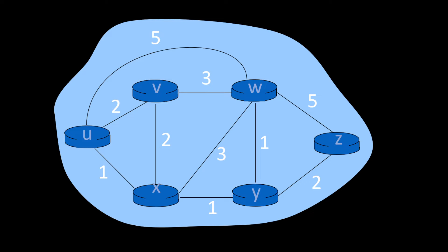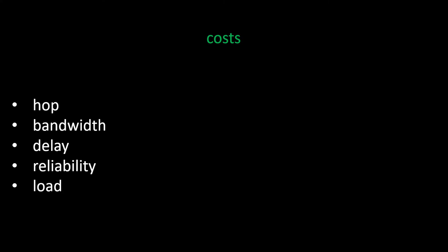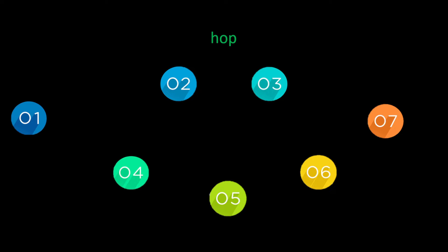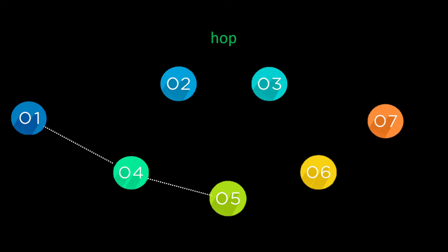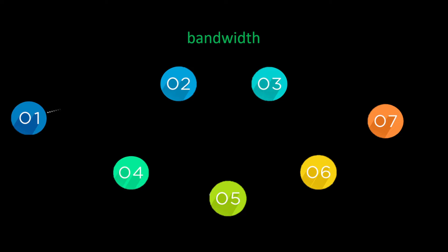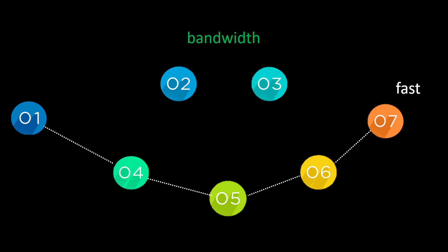When we show a network we have nodes and costs on the arcs. The main cost is hop count, but we'll look at others as well. Going by the top route we only have three hops — one to two, two to three, three to seven — whereas the bottom route has an additional hop. Another cost is bandwidth: the top route may have a slow connection, while the bottom route offers much faster, perhaps gigabit, bandwidth.